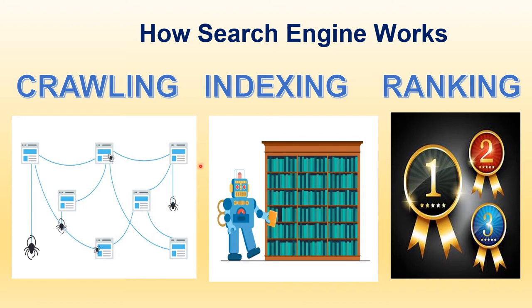Once a page is crawled, the next process is indexing. Indexing is the process of creating an index for all the fetched web pages and keeping them in a giant database from where they can later be retrieved. The information is stored in the Google index — just like a robot keeping books on a shelf in proper order. All fetched pages are kept in the Google index so they can be visible to the user when a query comes in.